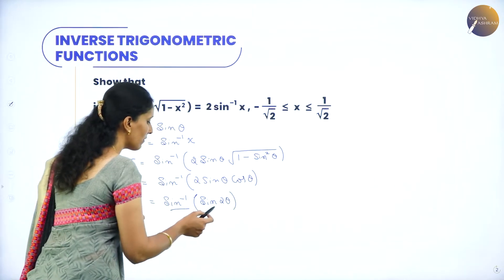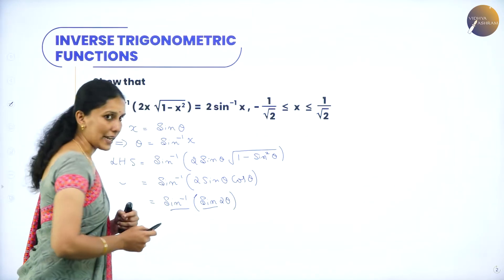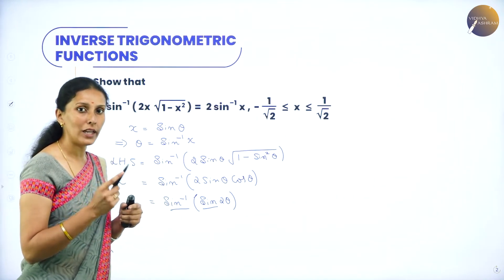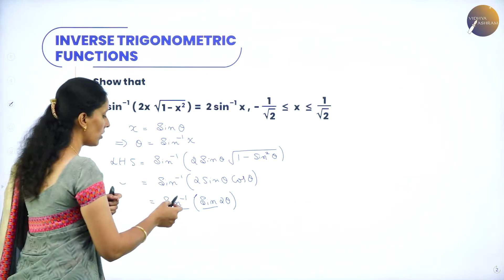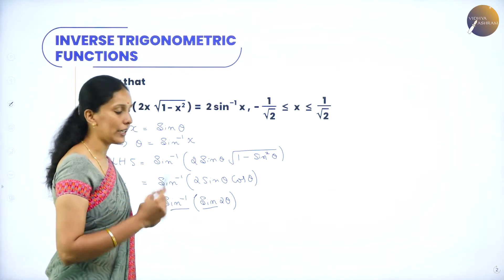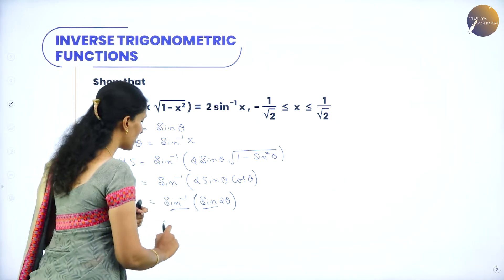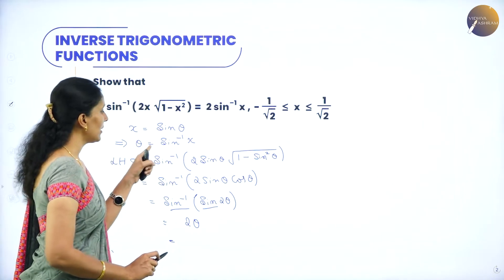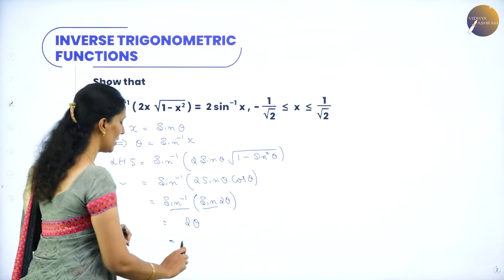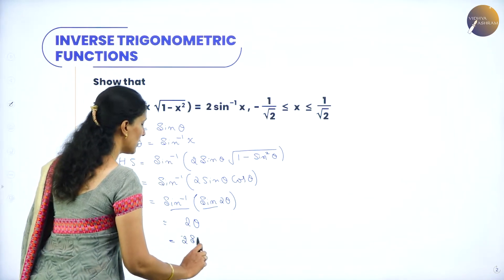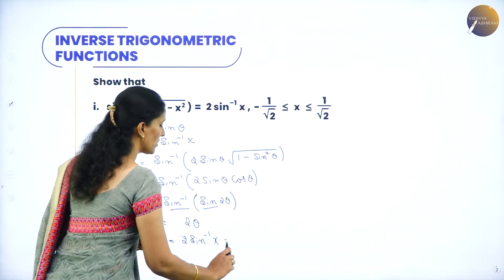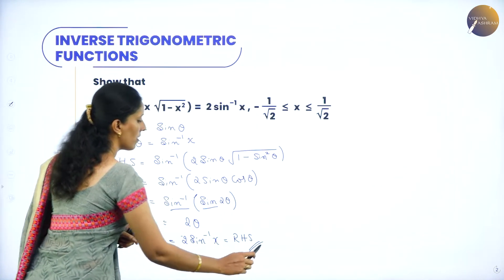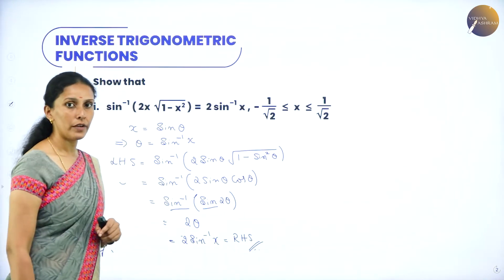Now 2 sin theta cos theta can be written as sin 2theta. We know that sin inverse of sin theta is theta itself. So sin inverse of sin 2theta can be written as 2 theta. Theta is sin inverse x, so we get 2 sin inverse x, which equals the RHS. Hence proved.